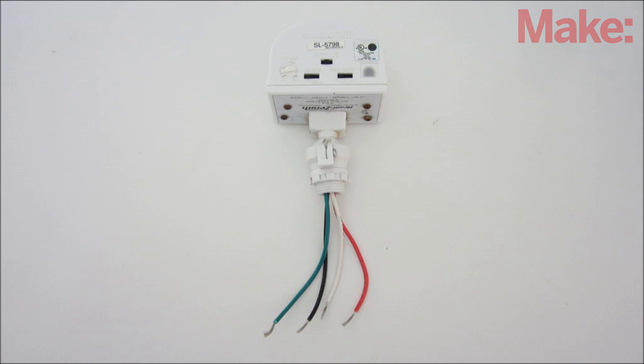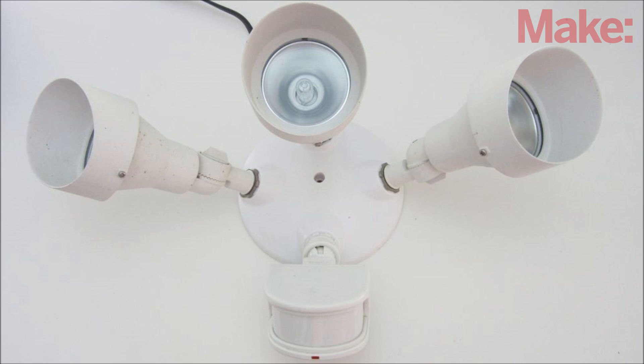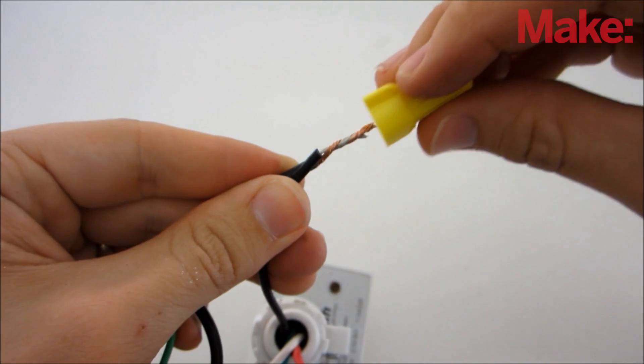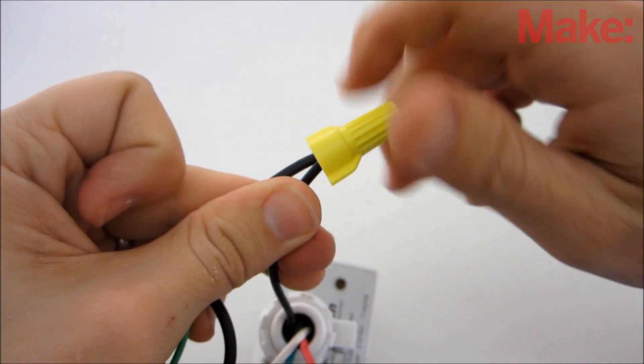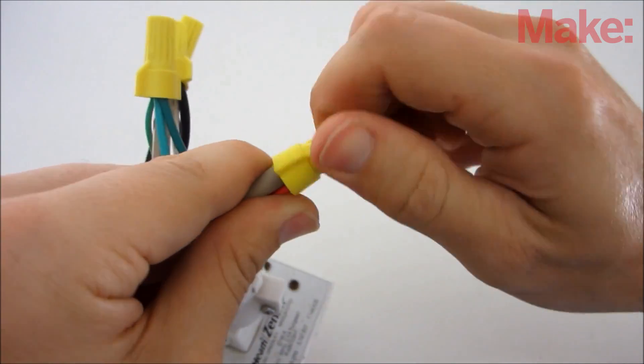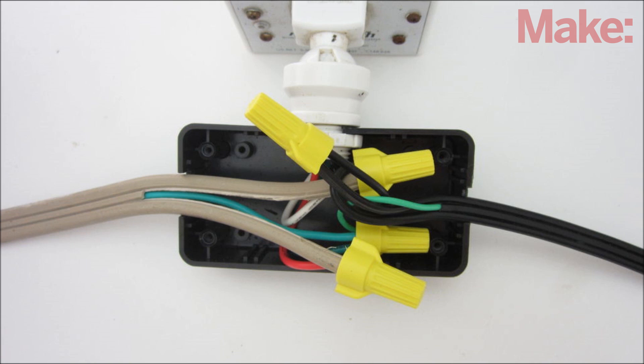First, you need a motion sensor that's designed to work with AC. I got mine from an old security light. Start by identifying all the wires. Then connect the input wires on the sensor to a power cord with a male end and connect the output wires on the sensor to a power cord with a female end. Lastly, add a small project enclosure to house all the connections.